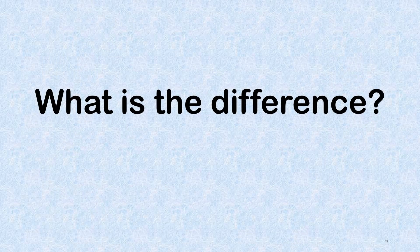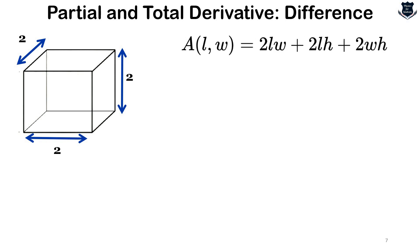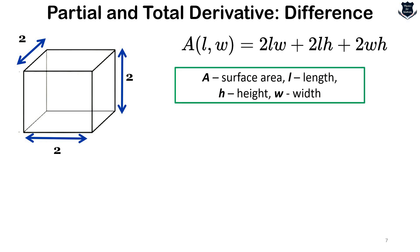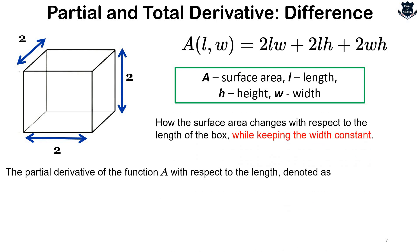Now let us see what the difference is, and the best way to understand it is to cite an example. Consider a simple function representing the surface area of a box: A(l, w, h) = 2lw + 2lh + 2wh, where A is the surface area, l is the length, h is the height, and w is the width. If we want to understand how the surface area changes with respect to the length while keeping the width constant, we take the partial derivative del A by del l.